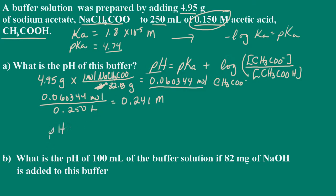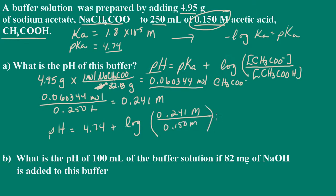Using the Henderson-Hasselbalch equation, the pH is equal to the pKa, which is 4.74, plus the log of our acetate concentration of 0.241 molar over our acetic acid concentration of 0.15 molar. We plug this into our calculator and we end up with a pH equal to 4.95. So that was easy enough for Part A. Let's go to Part B.